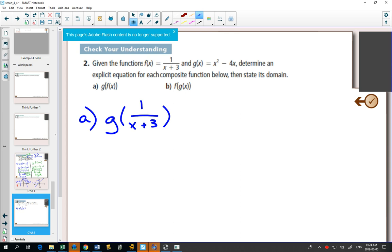Then g of x says whatever you plug in, square it and minus 4 times it as well. So if I plug in 1 over x plus 3, y equals 1 over x plus 3, that whole thing will get squared, minus 4 times 1 over x plus 3.